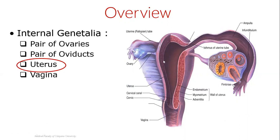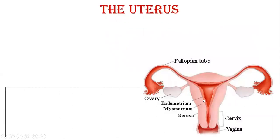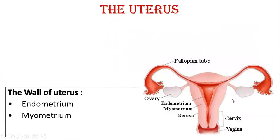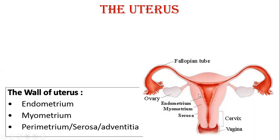We are going to discuss about the uterus — it has fundus, body, and cervix. The wall of the uterus has three layers seen from within outwards. Inside there is a triangular cavity, and the lining of the cavity is called the endometrium. The second part is the muscle layer, myometrium, and the third — the outermost covering — is called the perimetrium, adventitia, or serosa.